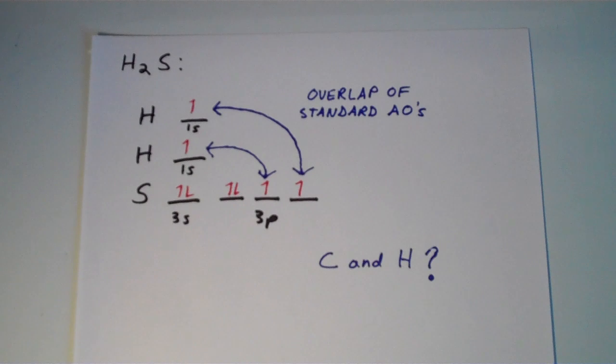And we saw in the last video that if we apply the simplest treatment of valence bond theory, which is overlapping of standard atomic orbitals. Standard atomic orbitals - what do I mean by that? Well, I'm just talking about the S, P, D, and F orbitals. If we consider chemical bonds as overlaps of these standard AOs, then sometimes that is a good treatment.